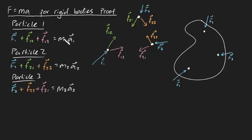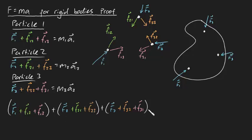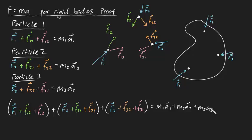Well, this is where we're going to use simultaneous equations. What I'm going to do is sum up all the forces acting on all three particles as purely a mathematical construct. So I'm going to sum up the left-hand side of all of these equations, getting F1 plus F12 plus F13, and then add that to the equations for particles two and three. This must be equal to the sum of the right-hand sides: M1*A1 plus M2*A2 plus M3*A3.